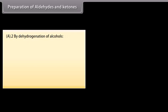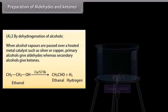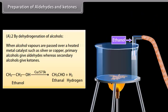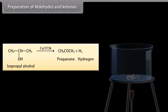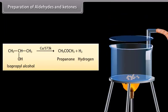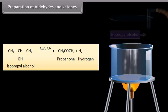By dehydrogenation of alcohols. When alcohol vapors are passed over a heated metal catalyst such as silver or copper, primary alcohols give aldehydes whereas secondary alcohols give ketones. When vapors of ethanol are passed over copper, ethanal is formed and hydrogen gas is released. When vapors of isopropyl alcohol are passed over copper, propanone is formed and hydrogen gas is released.